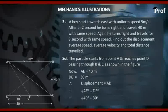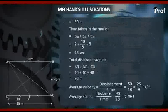under root AE squared plus DE squared equal to under root 40 squared plus 30 squared equal to 50 meter.